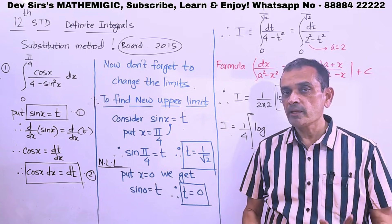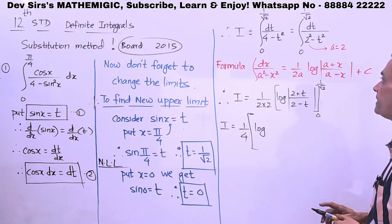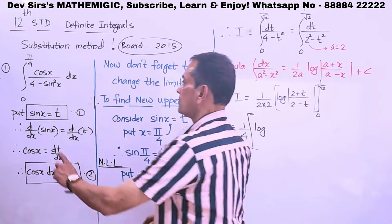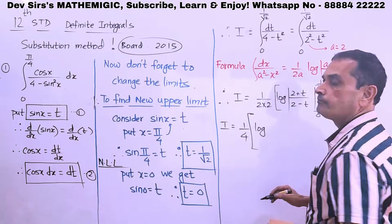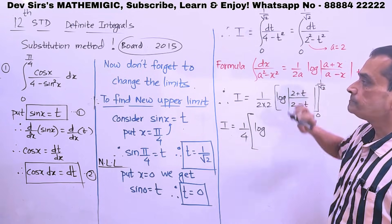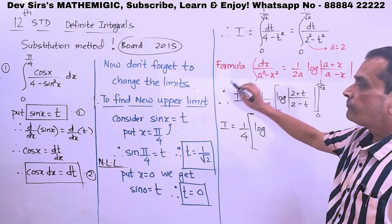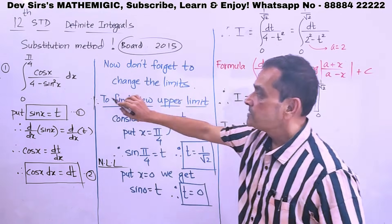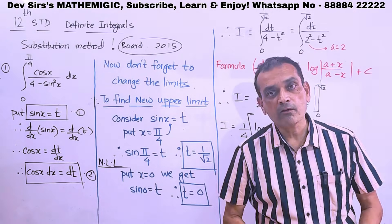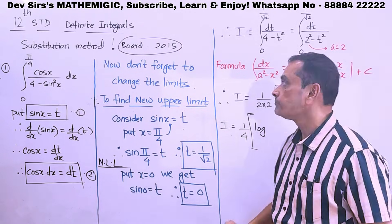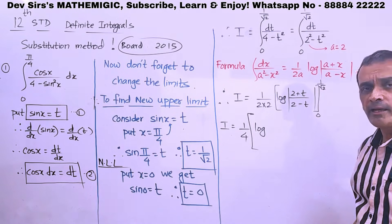So, definite integration. After making the substitution, we have changed the limits. Now, let us write the integral. Instead of 0 to pi by 4, I am going to write 0 to 1 upon root 2. Limits have changed. dt. Cos x dx is dt. 4 we didn't change. Sin x is t. So, you get 4 minus t squared. 4 minus t squared. You don't get 4 minus t. So, this I am going to write as 2 squared minus t squared.